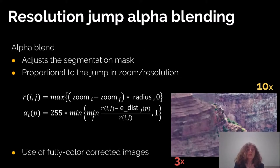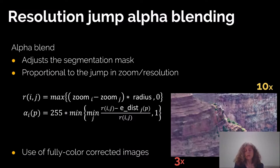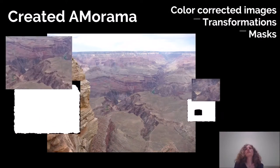A final step is a resolution jump alpha blend. When looking at the image, a low-resolution region appears blurry next to a high-resolution one, even if the transition is smooth in color and seam. We adjust this by adding a blend proportional to the jump in zoom resolution size, adjusting the segmentation mask with the blend radius. Since we use fully color-corrected images, there is no problem with masked parts appearing. The output is color-corrected images, transformations, and masks.